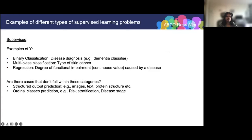Let's consider the types of supervised learning problems and some real-world examples. I'll focus on some medical examples, but supervised learning is useful in almost any field. Prediction problems can be of many types. When the label is binary — that is, it can take only two discrete values — it is known as a binary classification problem. For example, predicting whether a given individual has dementia or not gives you two classes, yes or no. You might also want to distinguish between several different classes — for example, distinguishing between different types of skin cancer from patient images. This is a multi-class classification problem.